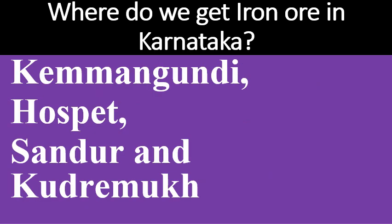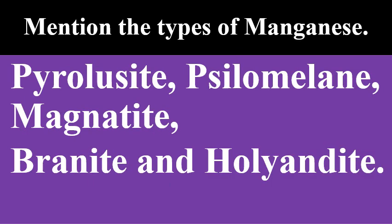Where do we get iron ore in Karnataka? Yemmmiganur, Hospet, Sandur and Kudremukh. What are the types of manganese? Pyrolusite, Psilomelane, Magnetite, Granite and Phanérite.